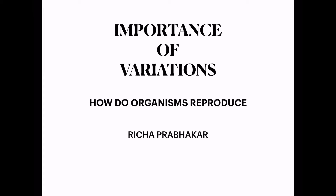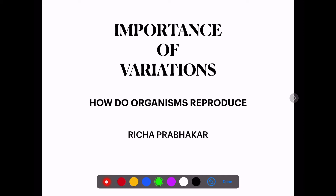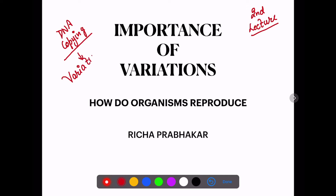This is our second lecture from the chapter 'How Do Organisms Reproduce.' In our last lecture we discussed in detail about the DNA copying mechanism and also started with the concept of variations — that if there are a few changes made during the time of DNA copying, which is the replication process, then these small changes lead to a term known as variations.